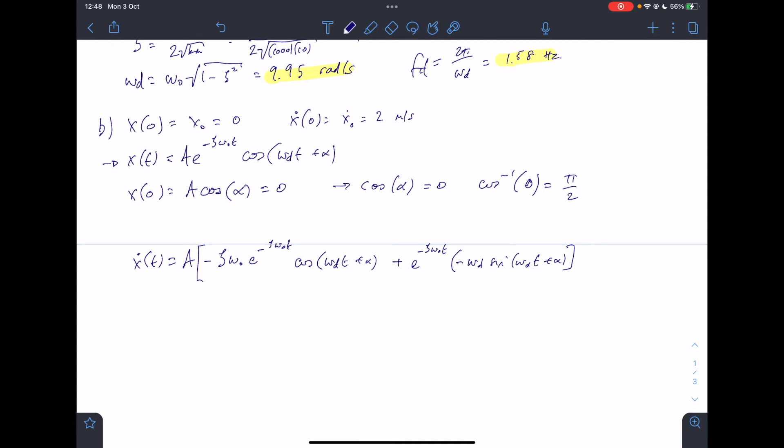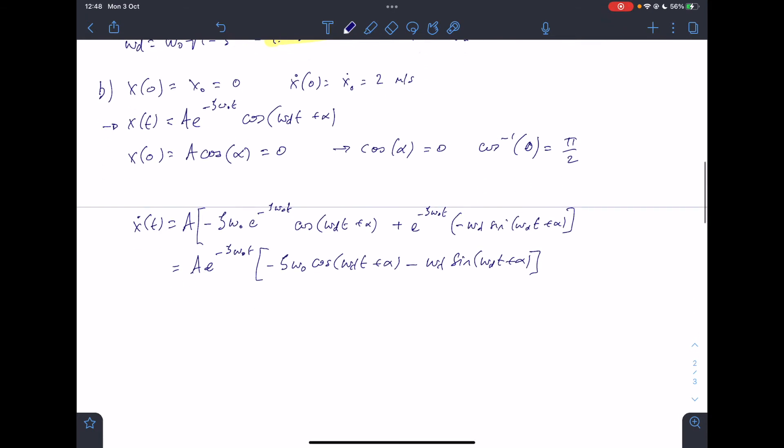Do you remember that as the product rule? I'll just write it down here: if y(x) is the product of two functions f(x) times g(x), then y prime of x, the derivative, is going to be f(x) prime times g(x) plus g(x) prime times f(x). Remember that, product rule? So that's how I got there.